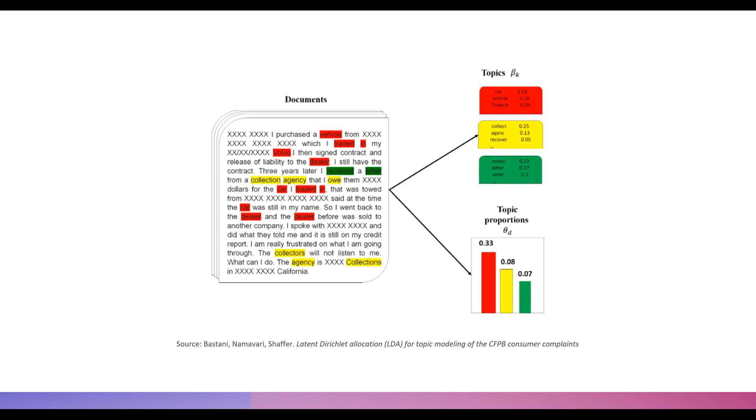This is well demonstrated in this image from an article on LDA called Latent Dirichlet Allocation for Topic Modeling of the CFPB Consumer Complaints. I have the source below, and I'll provide a link in the description. In this document, we see LDA at play. The text says 'I purchased a vehicle from XXX,' and it goes on.